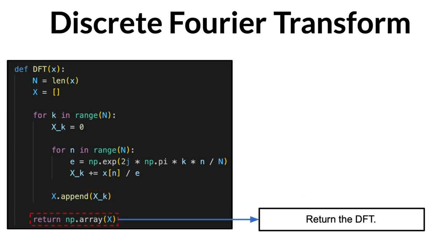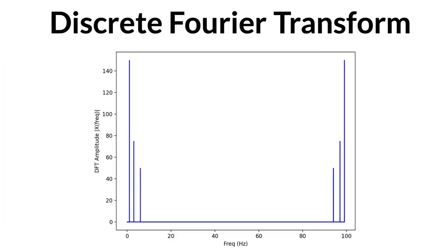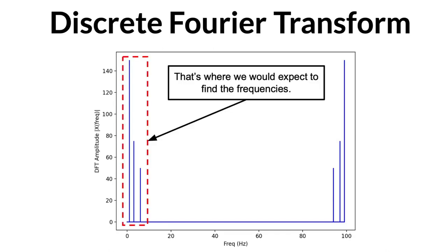And now, if we were to plot what we have obtained so far, we'd get the following. Okay, so it looks like we've got three frequencies in our signal, around where we expect them to be, at the beginning of the spectrum.